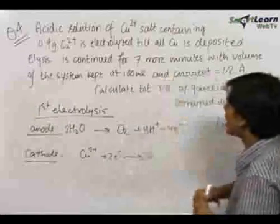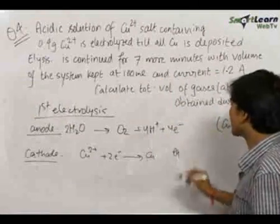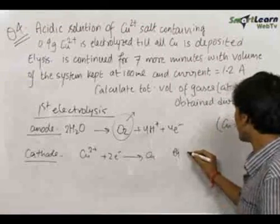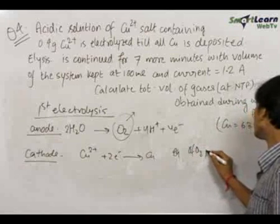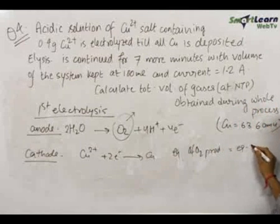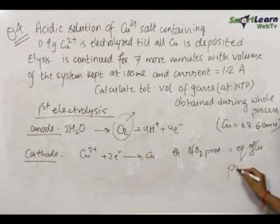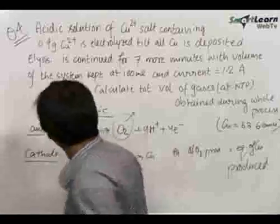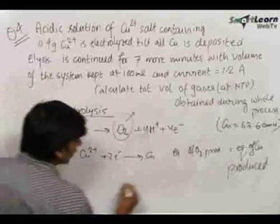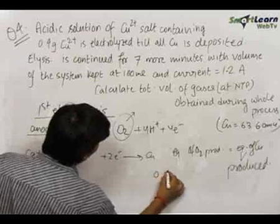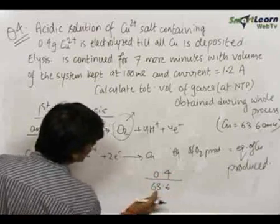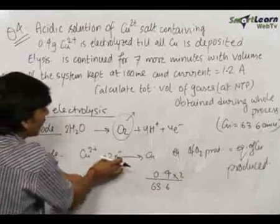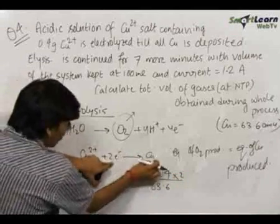In the first electrolysis, the only gas being produced is oxygen. Therefore, equivalents of O₂ produced equals equivalents of copper produced. Equivalents of copper produced equals 0.4 divided by 63.6 — that is the moles of copper produced — multiplied by 2, which is the valency factor, that is the number of electrons accepted or given per molecule of copper.